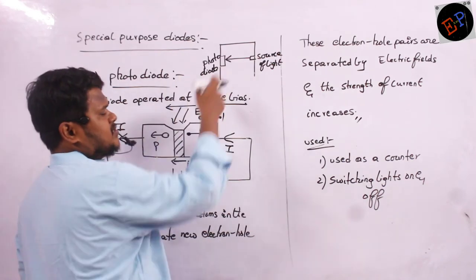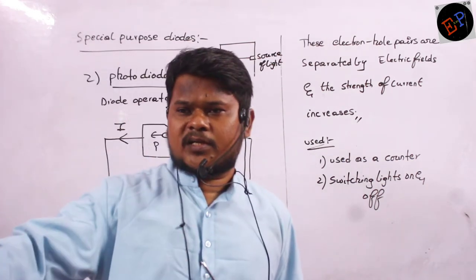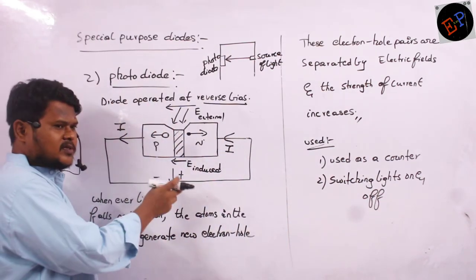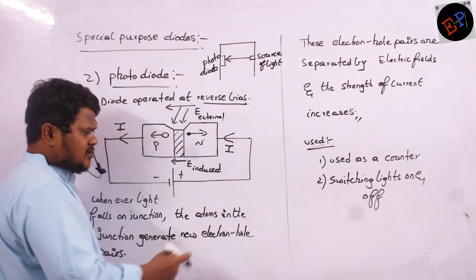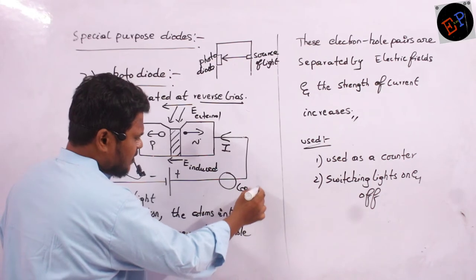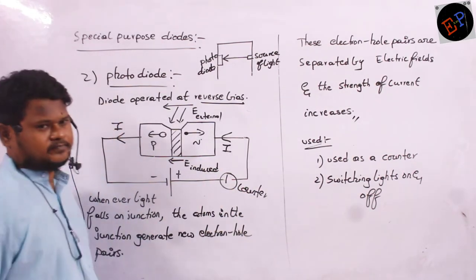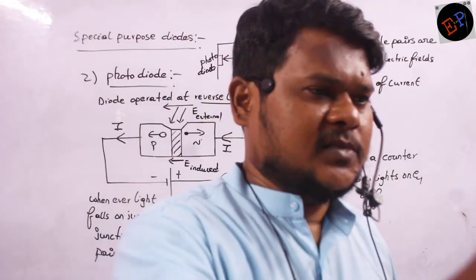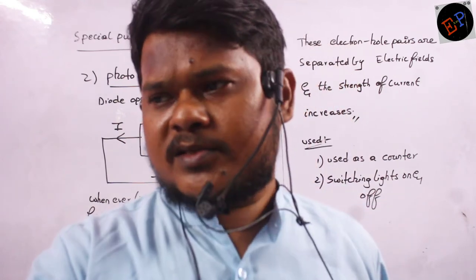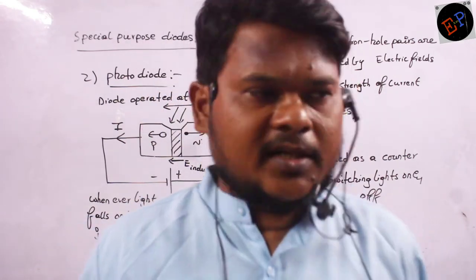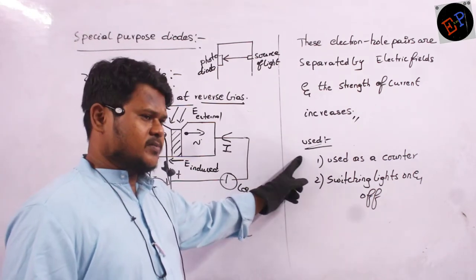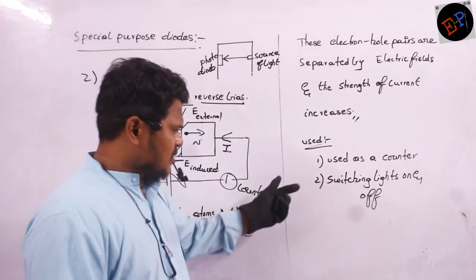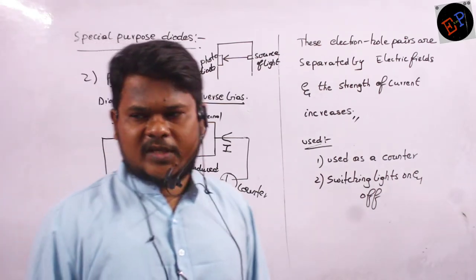A simple application: at an airport gate, a photodiode is placed on one side and a light source on the other side. Light continuously falls on the junction, producing large current. When a passenger passes, the light is obstructed, current reduces, and a counter placed there counts one passenger. Like this, photodiodes are used as counters and in automatic light switching mechanisms.